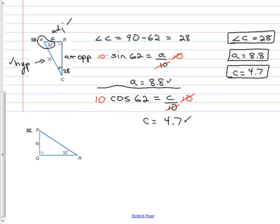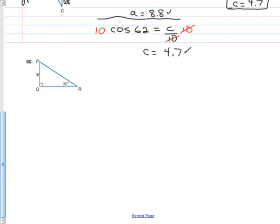You are ready to have your fun now. The assignment is page 573, numbers 2 through 44 even. Work with your neighbor if you need to. Your substitute may even be a trigonometry genius — you never know. I will see you when I get back.